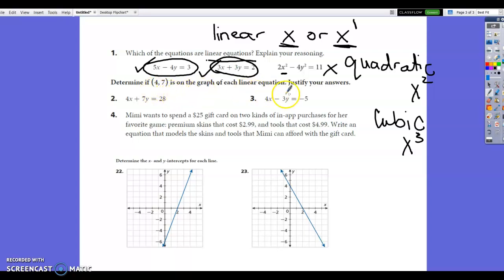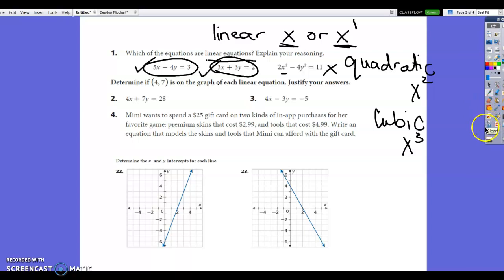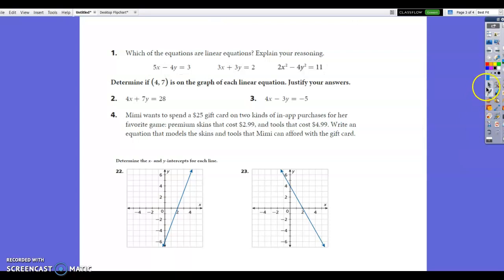Then you want to determine if 4, 7 is on the graph of the line. Every ordered pair is an x and a y. So we know that this is x and this is y. So x is 4, y is 7. And what we want to know is if this is a solution to this equation. So we can just look at this by plugging in the numbers. So we're going to say 4 times 4 plus 7 times y. y is 7 as well. And does that equal 28? So we've got 16 plus 49. Does that equal 28? Well, no, because 49 is already bigger than 28. So this one is no. So the left side does not equal the right side. That means it is not a solution.